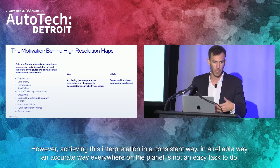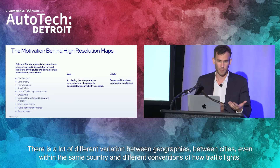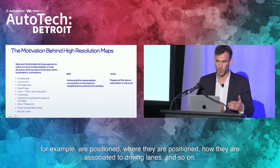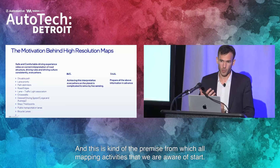However, achieving this interpretation in a consistent, reliable, and accurate way everywhere on the planet is not an easy task. There is a lot of variation between geographies, between cities even within the same country, and different conventions of how traffic lights are positioned, where they are positioned, and how they are associated to driving lanes. Understanding this through online sensors alone is very complicated and will require a lot of investment, making the entire system more expensive and less robust. This is the premise from which all mapping activities that we are aware of start.